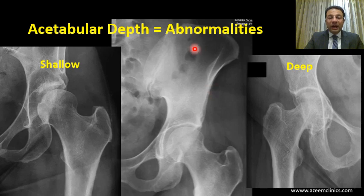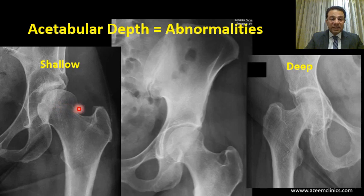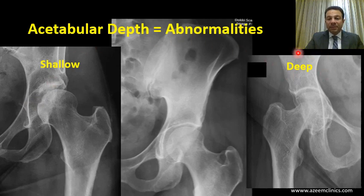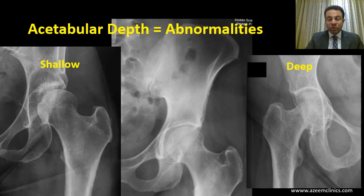So, thinking about the acetabular depth abnormalities: that's the normal acetabulum; that's a shallow acetabulum — you can see how the head is uncovered, with about 50% of the head protruding outside and the floor far away from the ilio-ischial line. On the other hand, if the acetabulum is deep, you can see how the head is touching the ilio-ischial line and protruding beyond it — what we name a deep socket, or a huge acetabulum, or protrusio acetabuli.